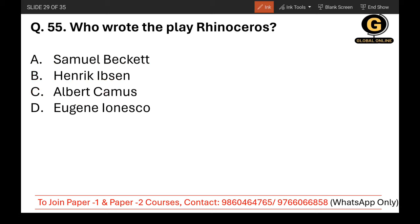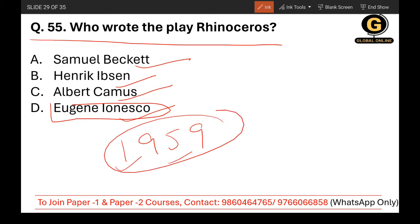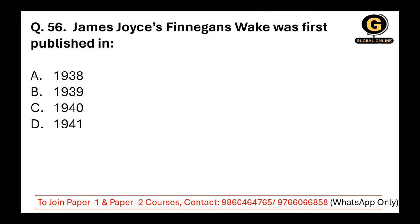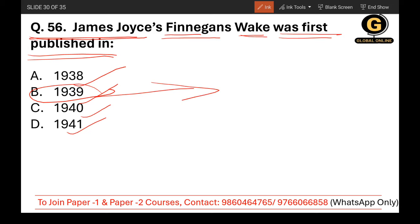Question 55: Who wrote the play Rhinoceros? The options are Samuel Beckett, Henry Pichette, Albert Camus, and Eugène Ionesco. The correct answer is Eugène Ionesco — it is a play first performed in 1959. Question 56: James Joyce's Finnegans Wake was published in which year? The options are 1938, 1939, 1940, or 1941. The correct answer is 1939.